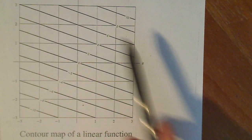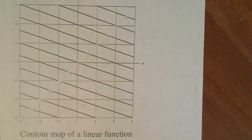So here we have this contour map that is a map of a linear function. And how do you know that this is a linear function or a plane?